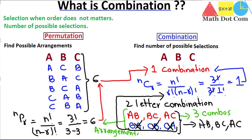This is how combination differs from permutation: because order does not matter in combination, the number of selections decreases compared to permutation. We consider selections without regard to order. That's all from today's lecture. In our next lecture we will see how permutation differs from combination in a different way.